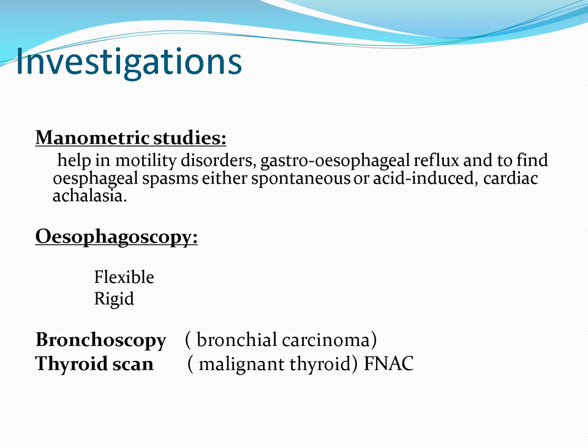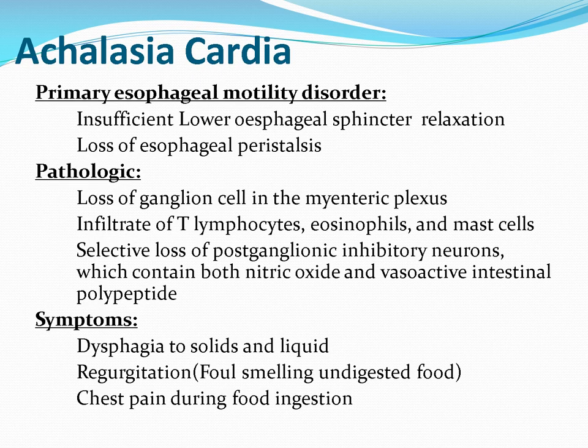Esophagoscopy can be flexible or rigid. If a foreign body is found, it can be removed; if a mass is found, biopsy can be taken; and strictures can be dilated. Bronchoscopy can find any tumor in the bronchus. Thyroid scan is mandatory if there is thyroid enlargement, and FNAC can be advised.